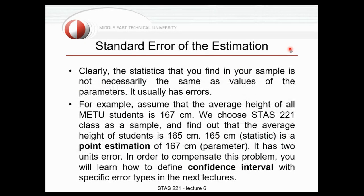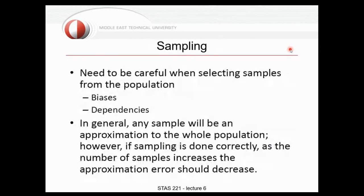The next notation is the standard error of estimation. When I take a sample and find the average height, it's not necessarily the same as the true population parameter. For example, I might have a two-centimeter error — this is totally normal with point estimation. To improve it, we consider a confidence interval: not just one point, but an interval as the estimation. We can even say we are 99% sure the population parameter falls inside this interval.